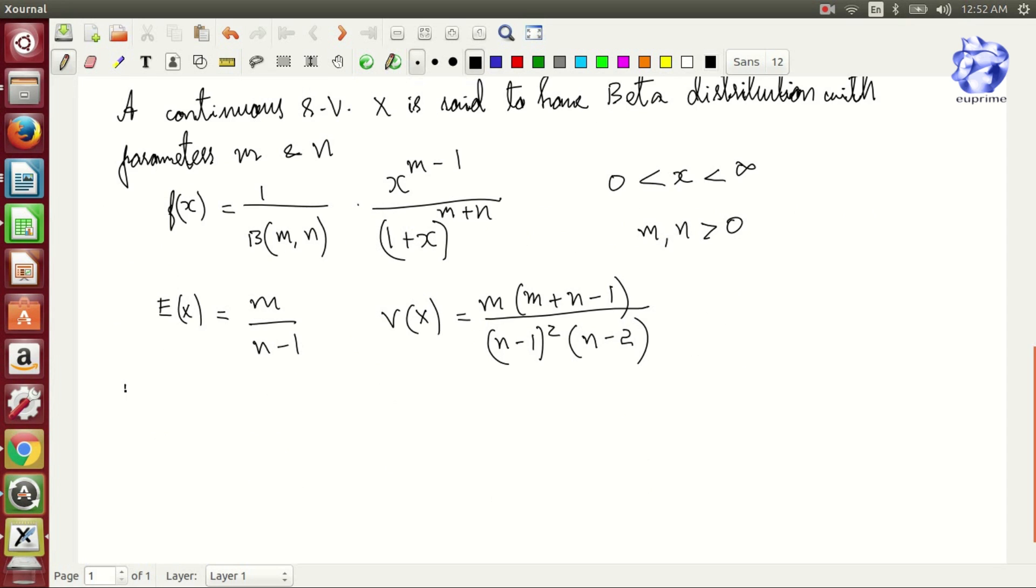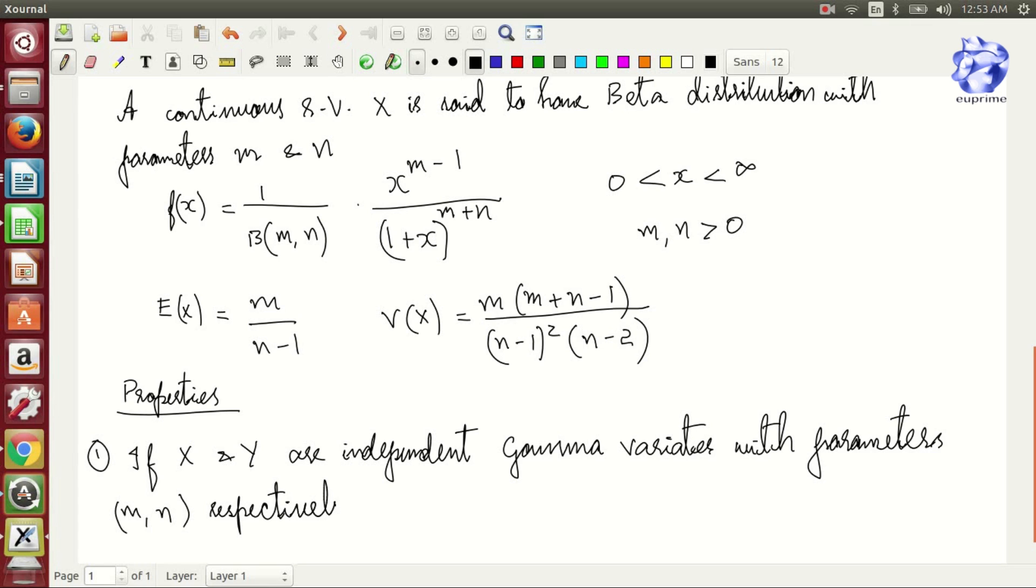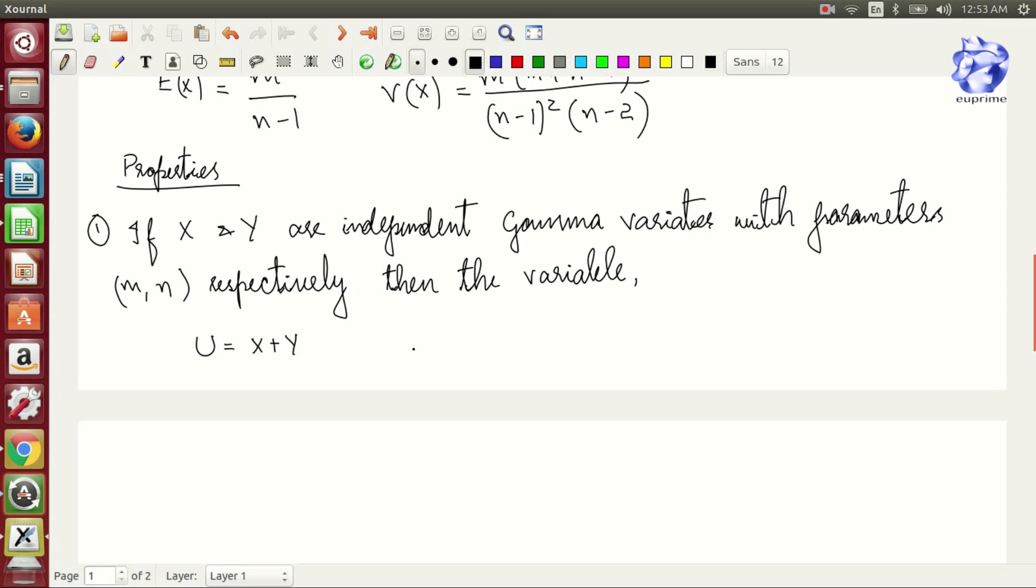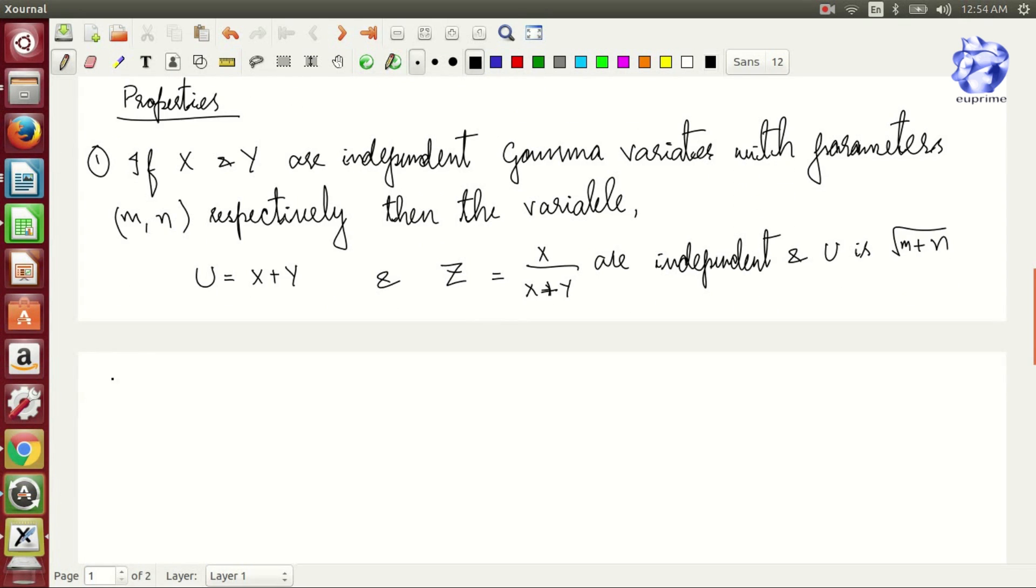Let's go through some properties. If X and Y are independent gamma variates with parameters m and n respectively, then the variables U which is X+Y and Z which is given by X/(X+Y) are independent, and U is gamma(m+n) variate and Z is beta(m,n) variate.